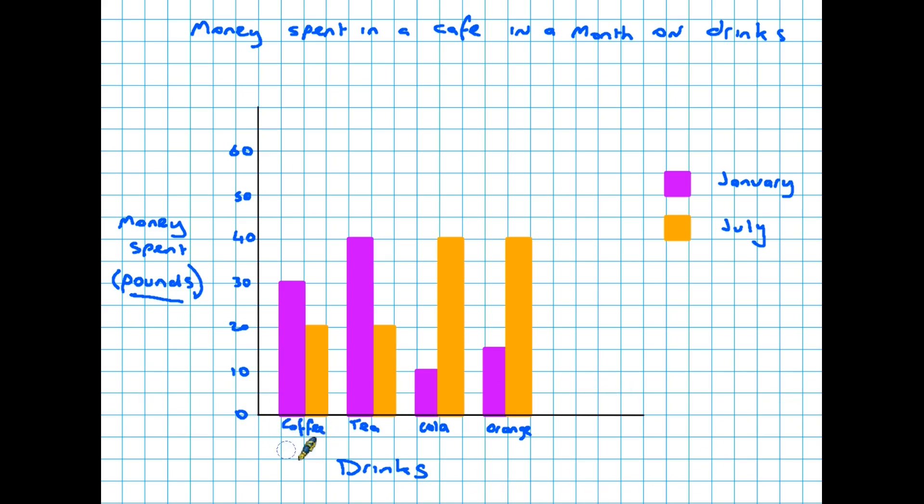Now the other thing you'll have noticed about this graph is that when you look at the coffee here there's not one but two bars and they are in distinct colors. And each drink has the same two bars, a purple and a mustardy color. So why two? Well over here this graph has something that the first two didn't, it has something we call a key, and it is telling us that the purple bars are representing January, so this is a month in January, whereas the yellow, the mustard colored bars are July. We call this a dual bar chart.